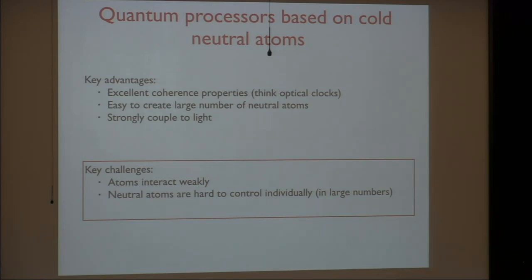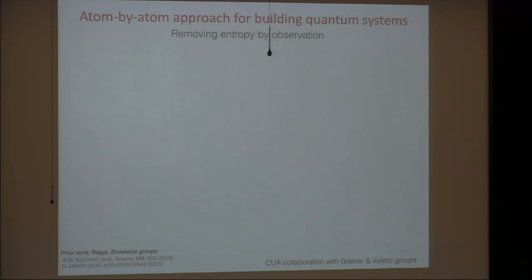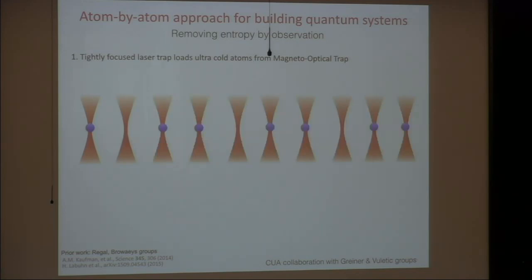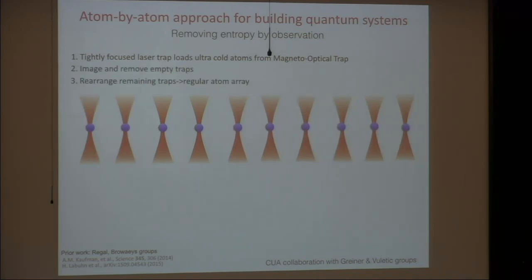Motivated by these considerations, a couple of years ago we started to explore a new approach to building quantum systems. In this approach, we use an idea similar to the Maxwell demon, where we actually remove the entropy by observation. Specifically, we start with a gas of pre-cooled atoms, pre-cooled by conventional techniques of laser cooling, and then we shine focused laser beams — so-called optical tweezers — inside a vacuum chamber. We focus the tweezers so tightly that each of them can at most have one atom. Instead of starting with one tweezer, we start with many, typically about 100, and try to load them all at once. Because the system has entropy, some traps end up loaded and some are empty. To remove the entropy, we simply take a picture of these atoms, figure out which traps are full and which are empty, remove the empty traps, and rearrange the filled traps into the desired configuration.